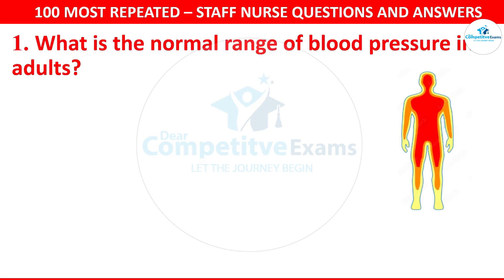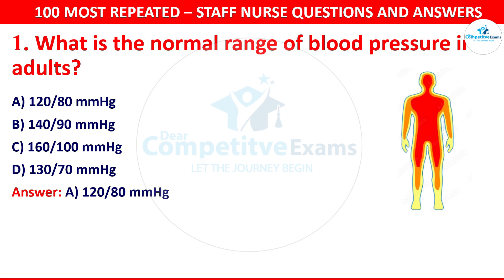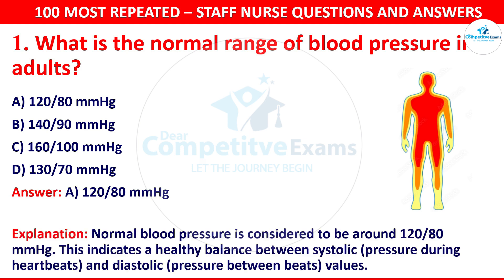What is the normal range of blood pressure in adults? The options are 120 by 80, 140 by 90, 160 by 100 or 130 by 70. The correct answer is 120 by 80. Normal blood pressure is considered to be around 120 by 80 mmHg, indicating a healthy balance between systolic pressure during heartbeats and diastolic pressure between beats.